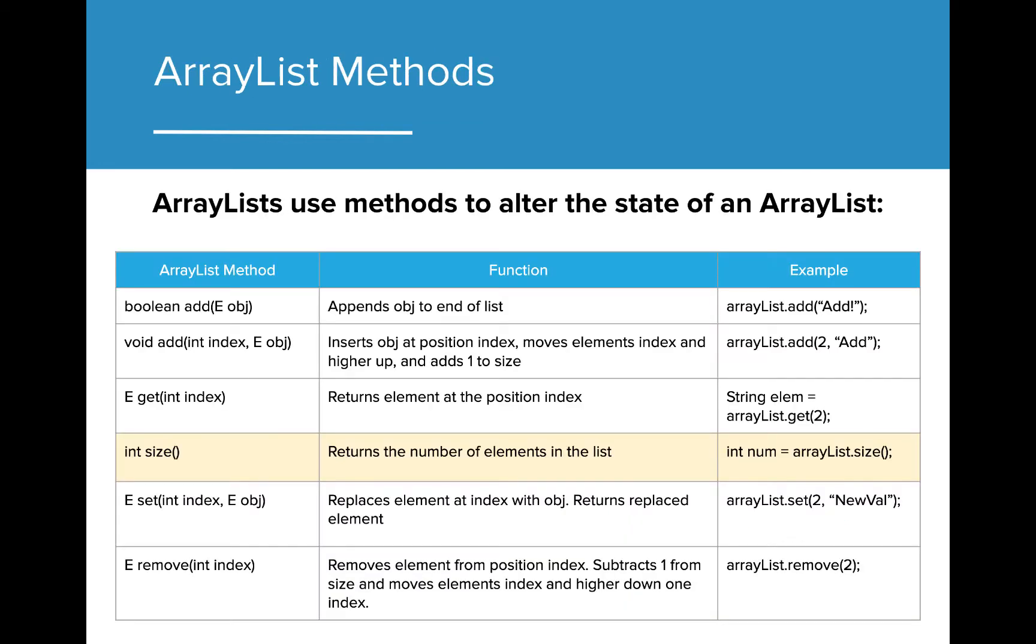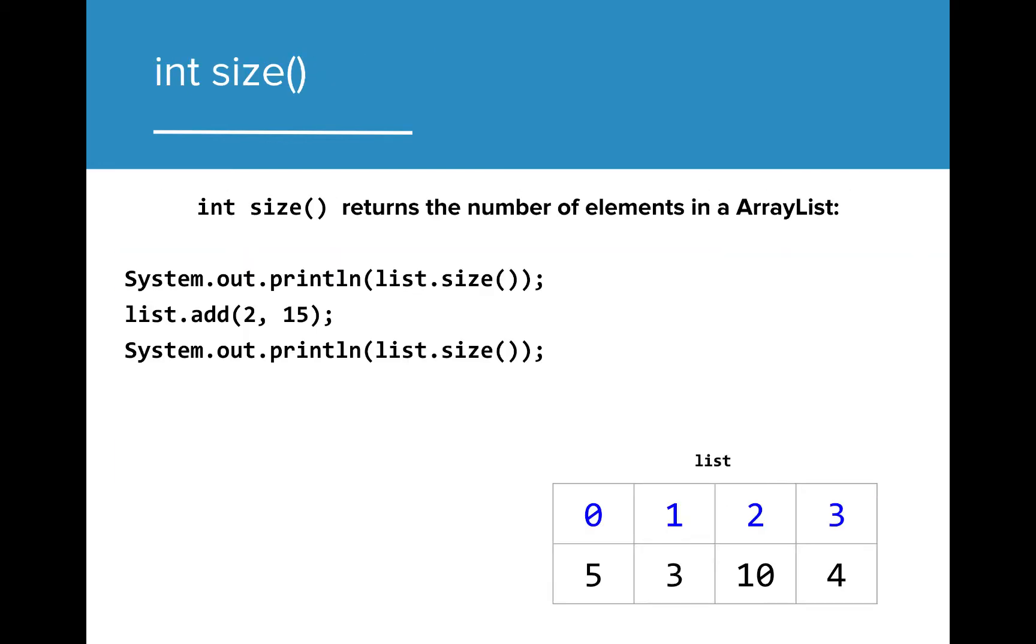The next method we're going to look at is the size method. The size method returns the number of values that are currently hosted in the ArrayList. When we print the value of this ArrayList originally, we see that the value is 4. After we add a value to the list and check the size again, we can see the value has changed to reflect how many items are in the ArrayList.